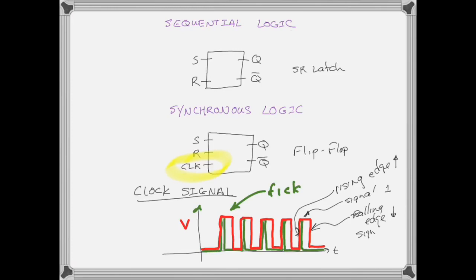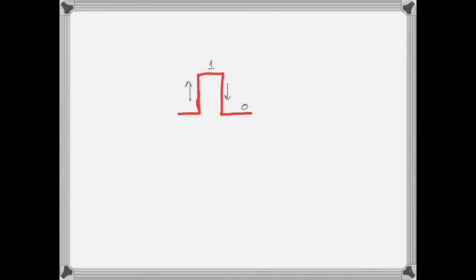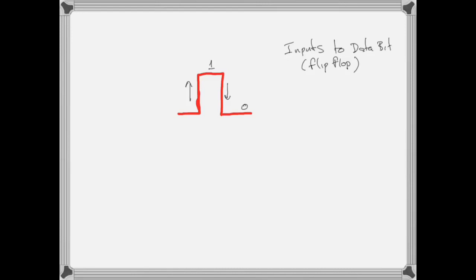So there's actually four parts to a single clock pulse: a rising edge, the time when it's on, a falling edge, and the time when it's off. Each of those four pieces — zero, one, rising edge, and falling edge — are signals to a data bit or piece of sequential logic. So the possible inputs are now zero, one, rising edge, and falling edge.